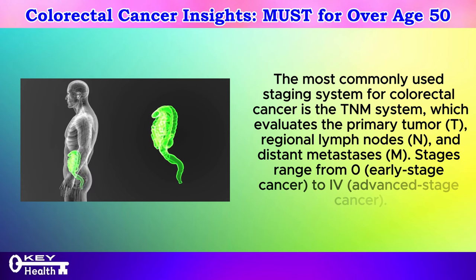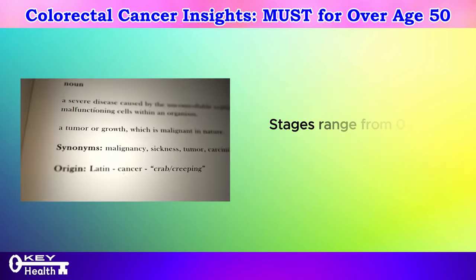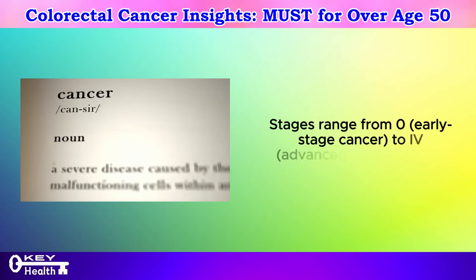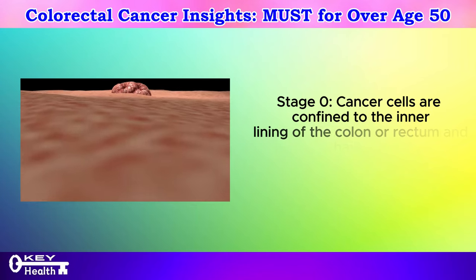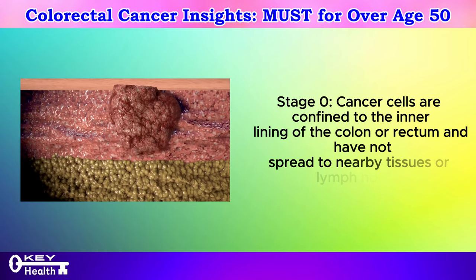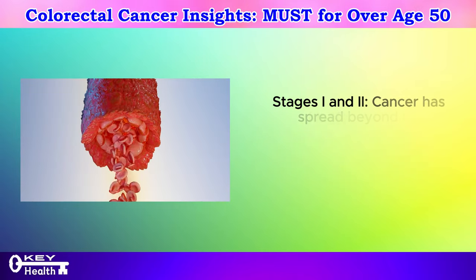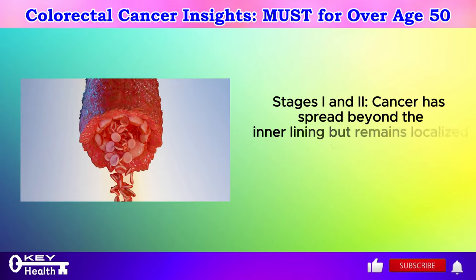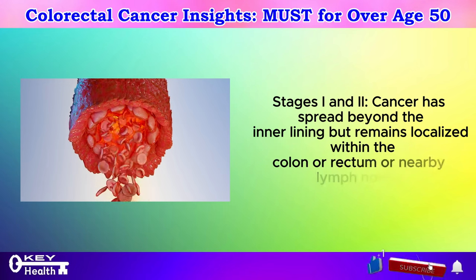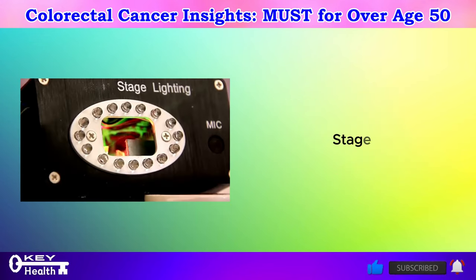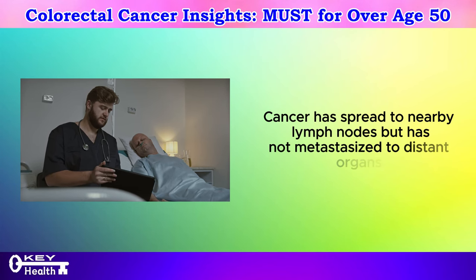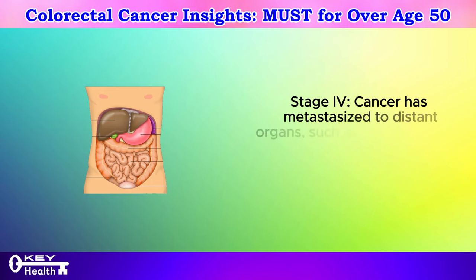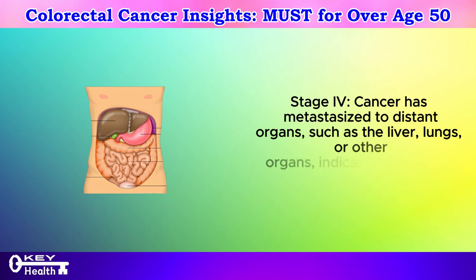Stages range from 0 to 4. Stage 0: cancer cells are confined to the inner lining of the colon or rectum and have not spread to nearby tissues or lymph nodes. Stages I and II: cancer has spread beyond the inner lining but remains localized within the colon, rectum, or nearby lymph nodes. Stage III: cancer has spread to nearby lymph nodes but has not metastasized to distant organs. Stage IV: cancer has metastasized to distant organs such as the liver, lungs, or other organs, indicating advanced disease.